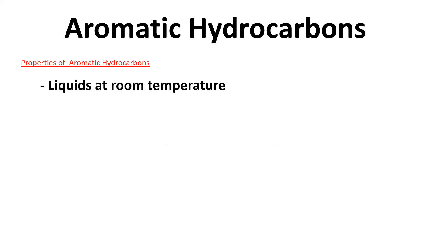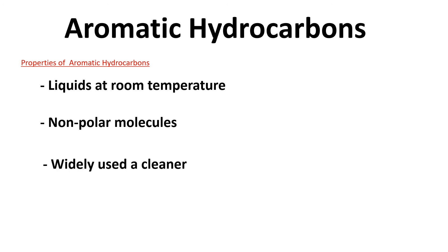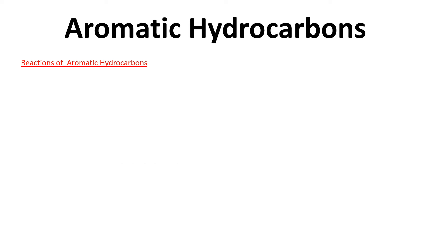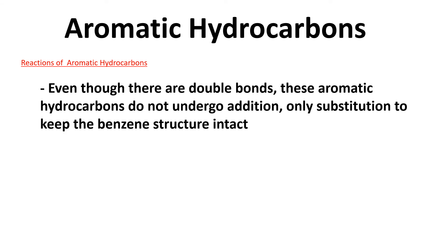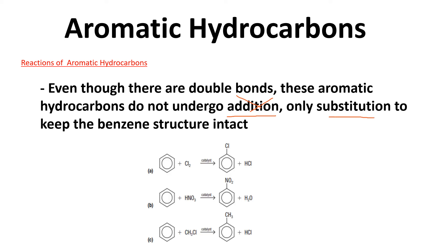Some properties of aromatic hydrocarbons: they're liquids at room temperature, they are non-polar molecules, and they're widely used in metal cleaners. For reactions, with all the double bonds you might expect addition reactions, but breaking a double bond inside the ring means you no longer have benzene — you'd have a cycloalkene. So aromatic hydrocarbons generally prefer substitution reactions, where a hydrogen is replaced by another group. Examples include chlorine substitution producing HCl, a nitro group attaching with water formed, and a methyl group attaching also producing HCl.